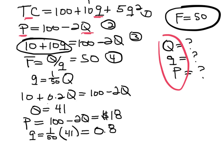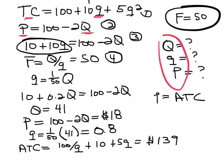That means whether P equals ATC or not. We can try to find that out pretty easily because we know that ATC is going to be equal to TC divided by q, which is going to be equal to 100/q + 10 + 5q. We already know q, so if we replace q with 41 in this equation, we find out that the average total cost is $139.